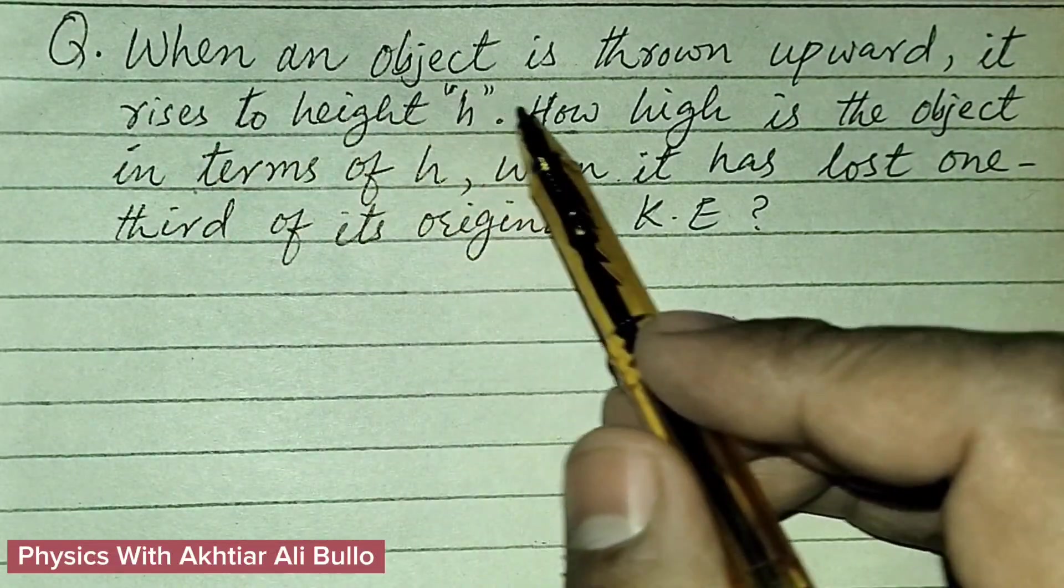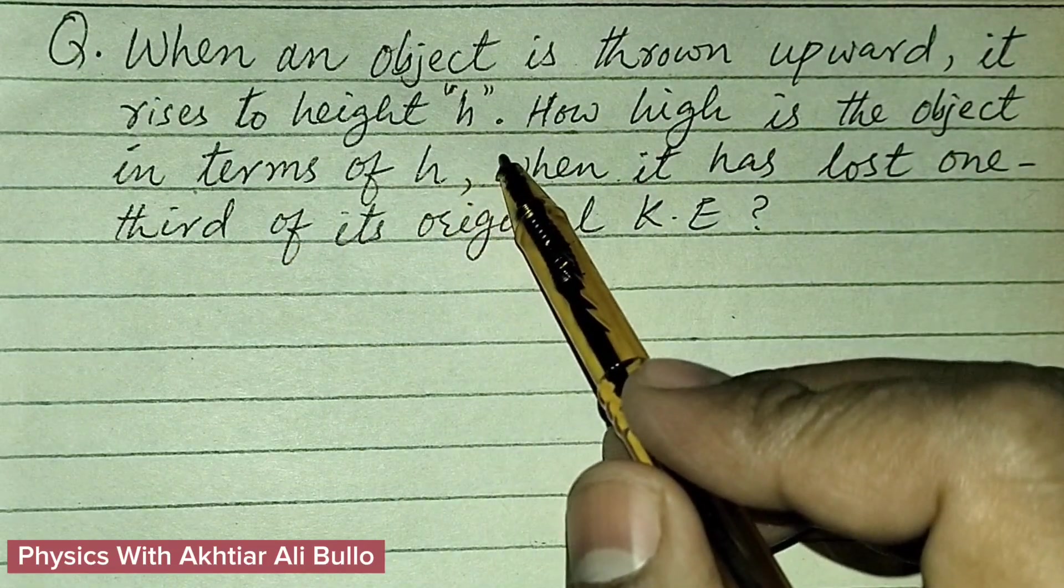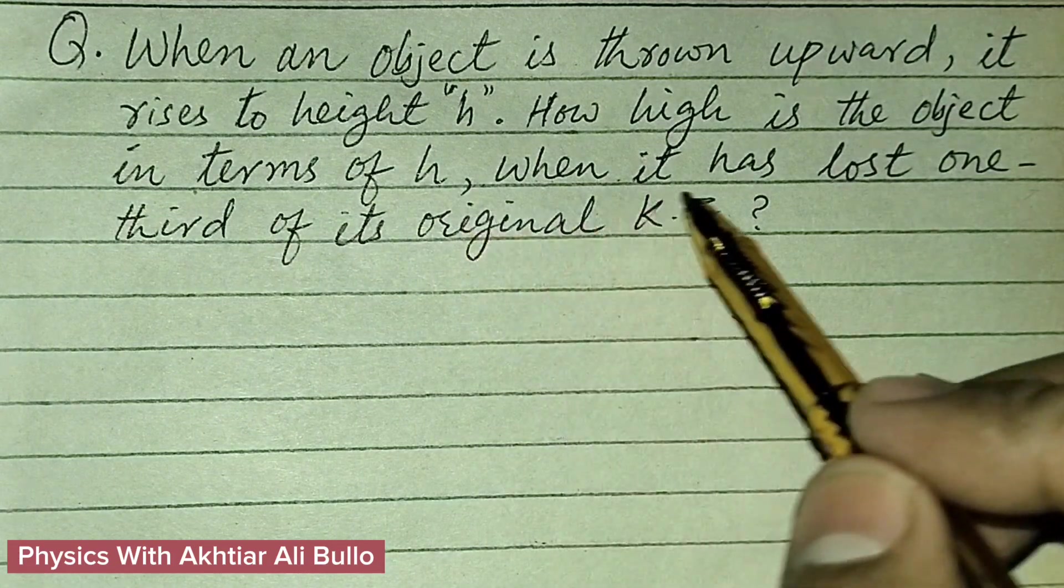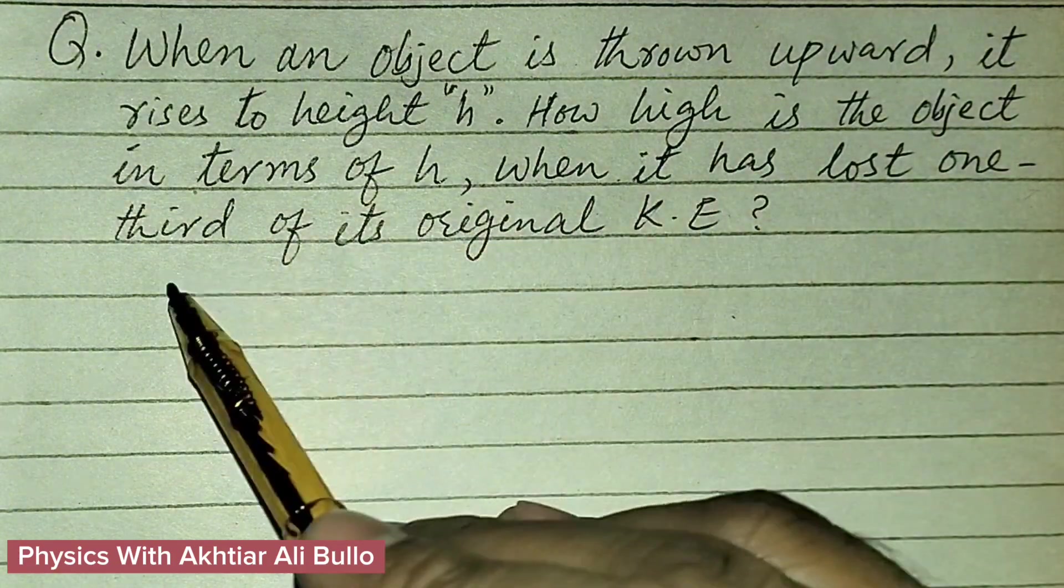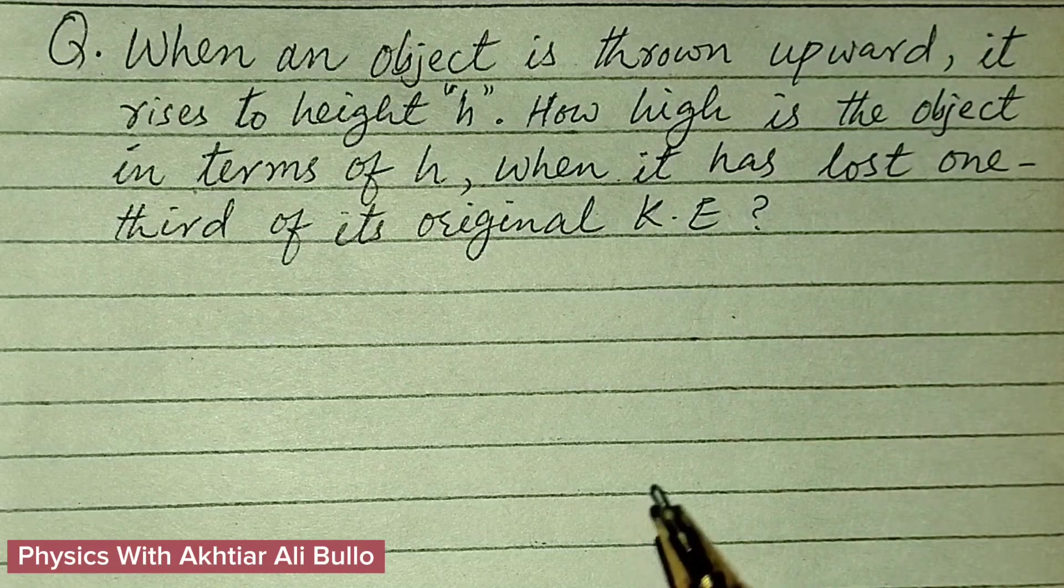The question is: when an object is thrown upward it rises to height h, how high is the object in terms of h when it has lost one-third of its original kinetic energy?